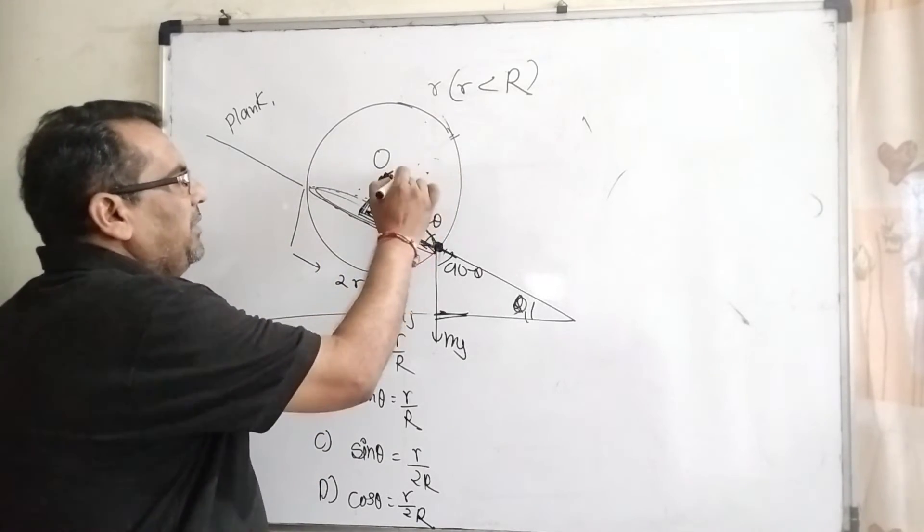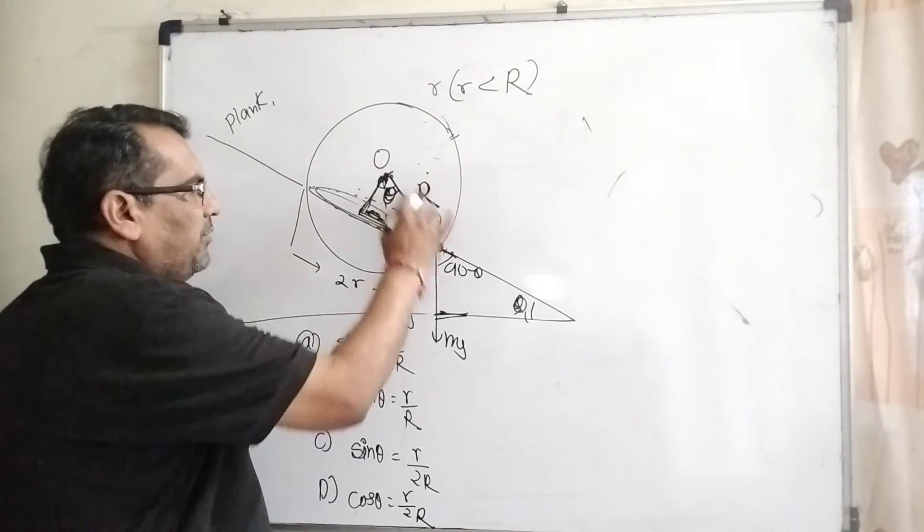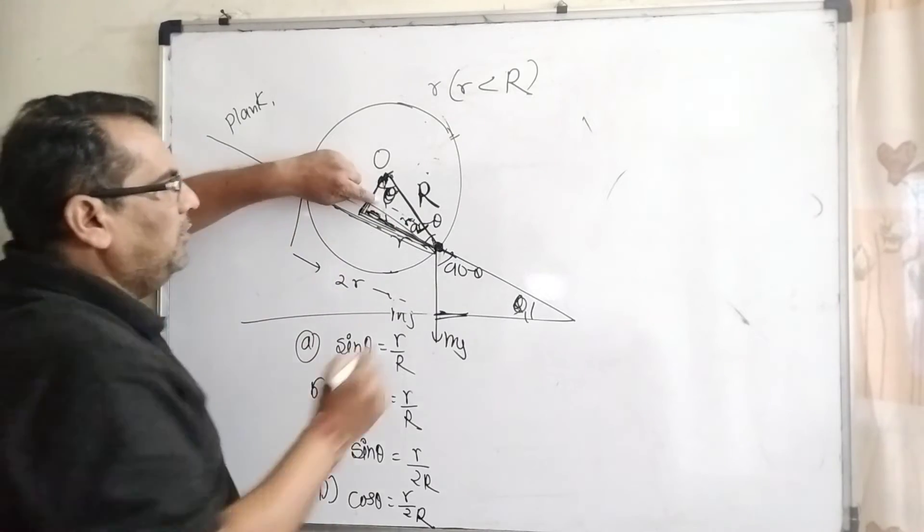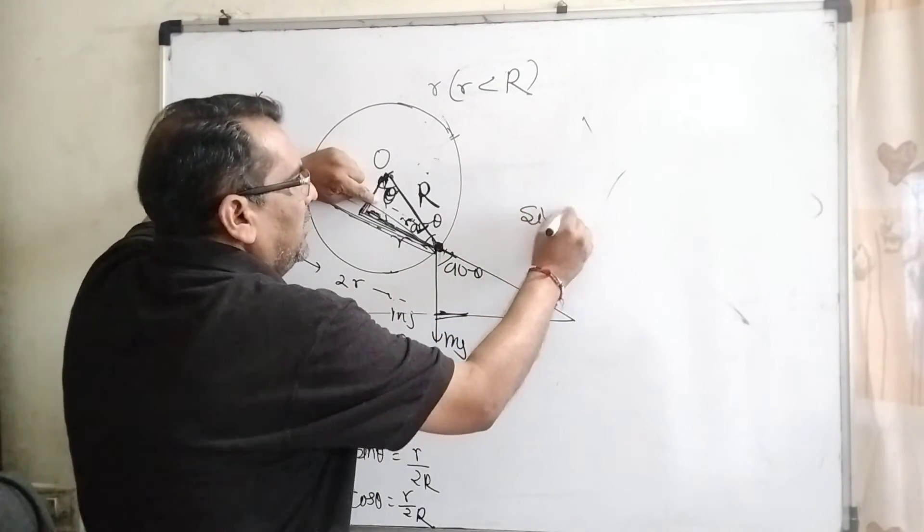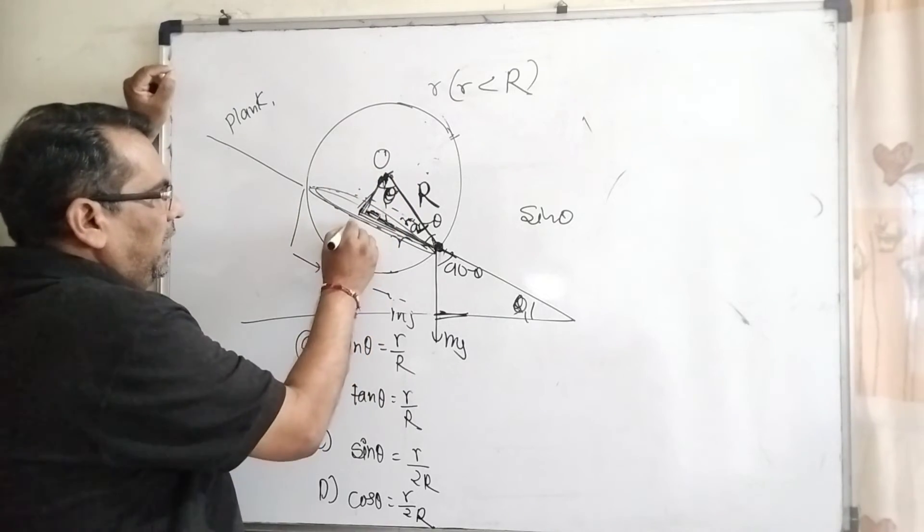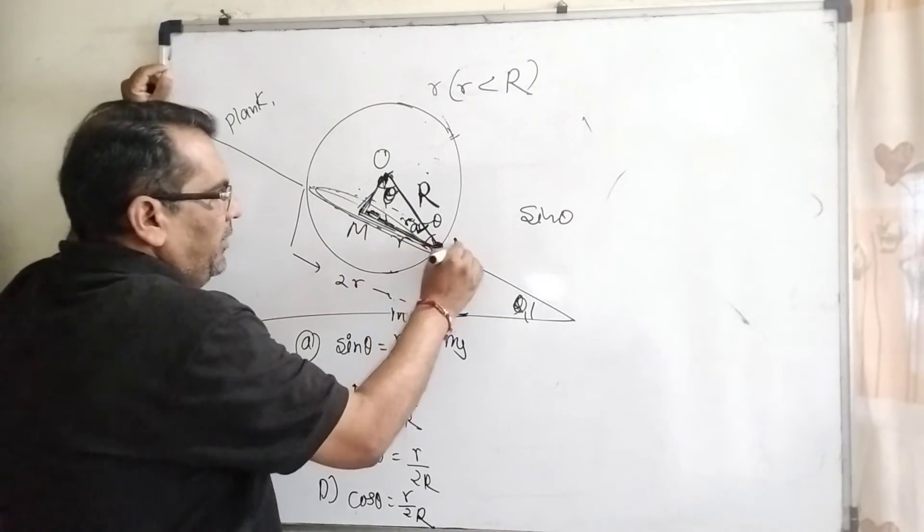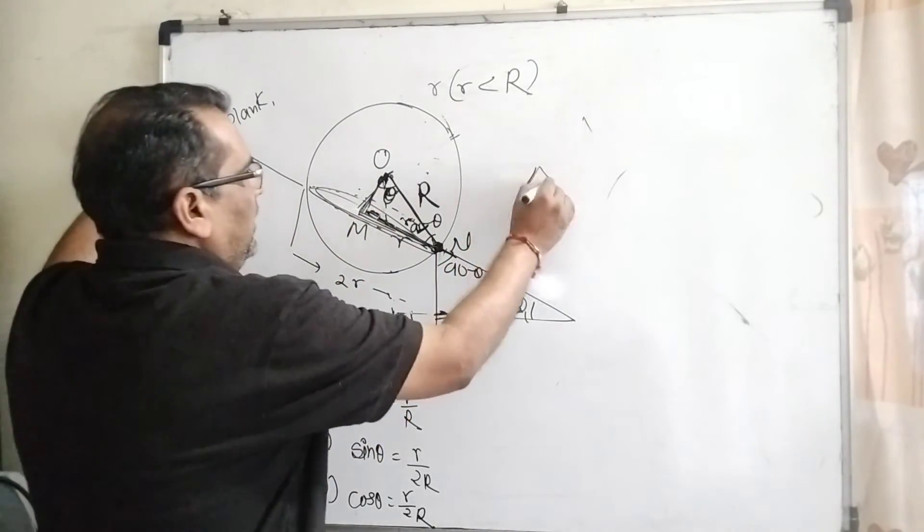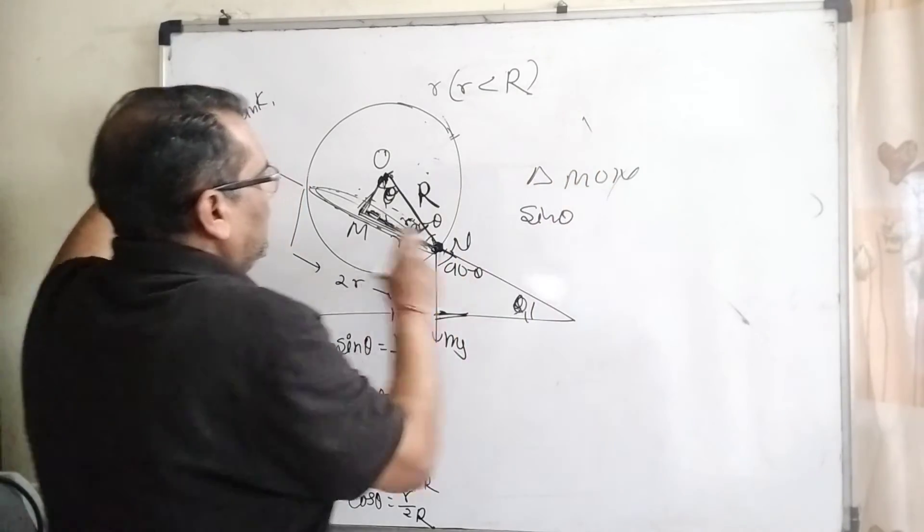And this is capital R, the radius of the football. We have to find sine theta. Label this point M and this point N. In triangle MON, this angle is theta.